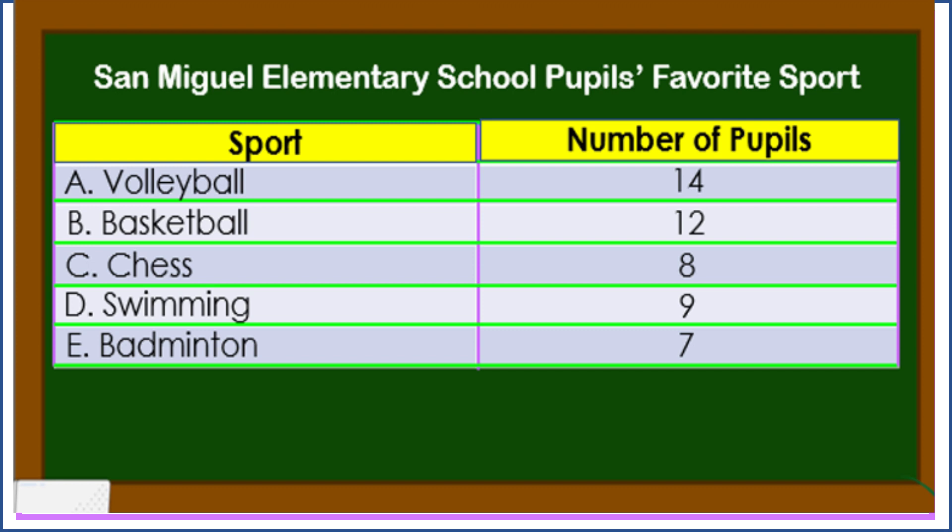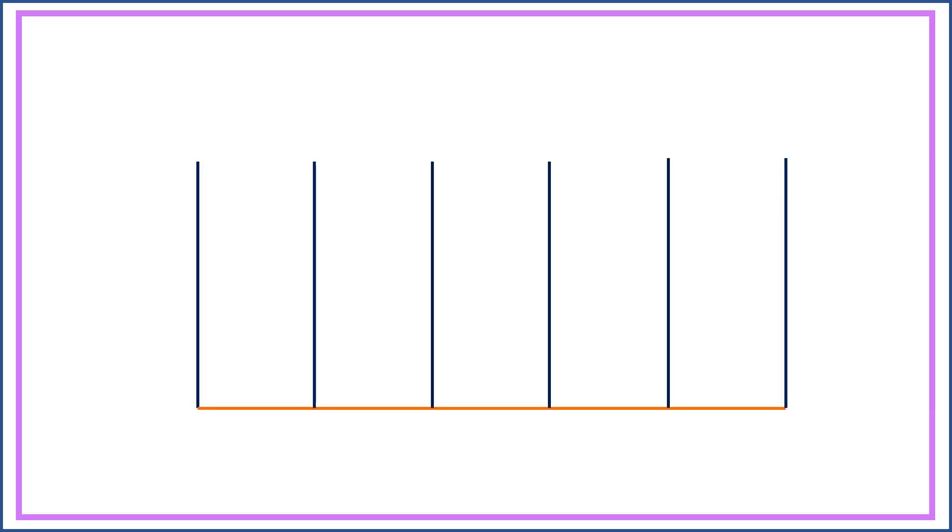First, we're going to draw a vertical bar graph. Watch and observe how we're going to do it. First, we're going to draw vertical and horizontal axis. For the vertical axis, we're going to draw six vertical lines because we have five kinds of sports in the table. The vertical lines represent the kinds of sports.